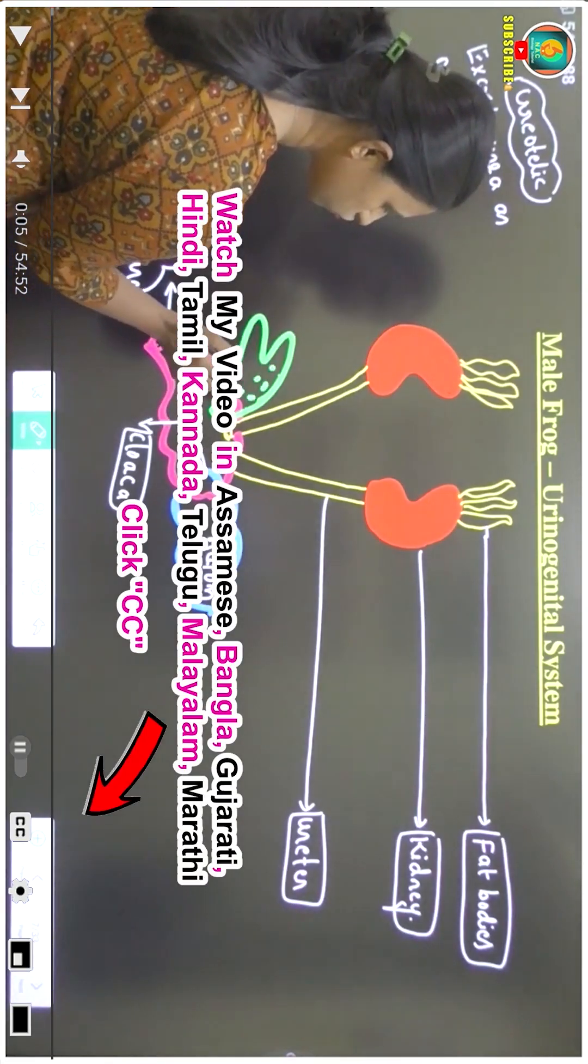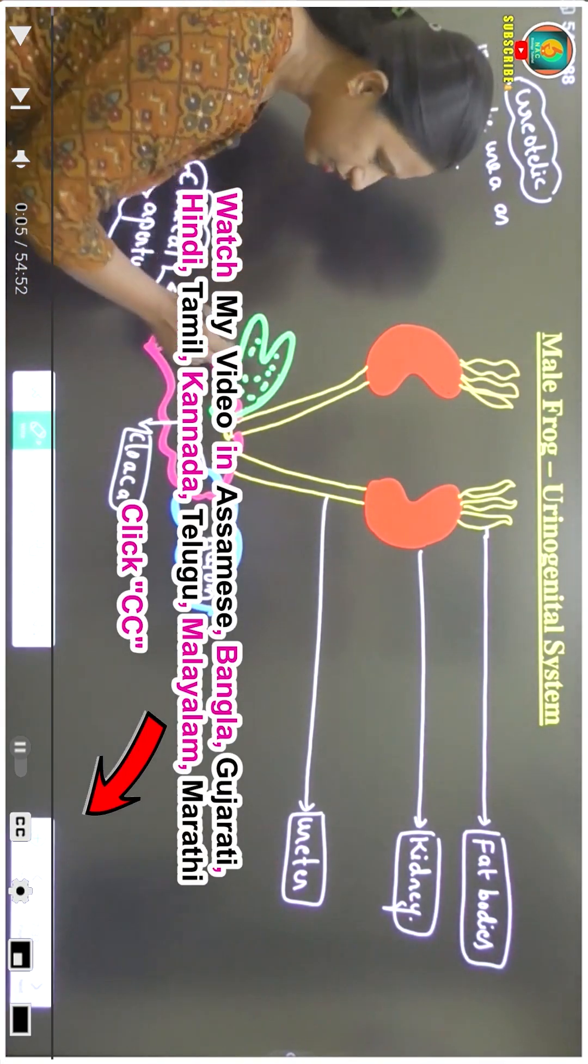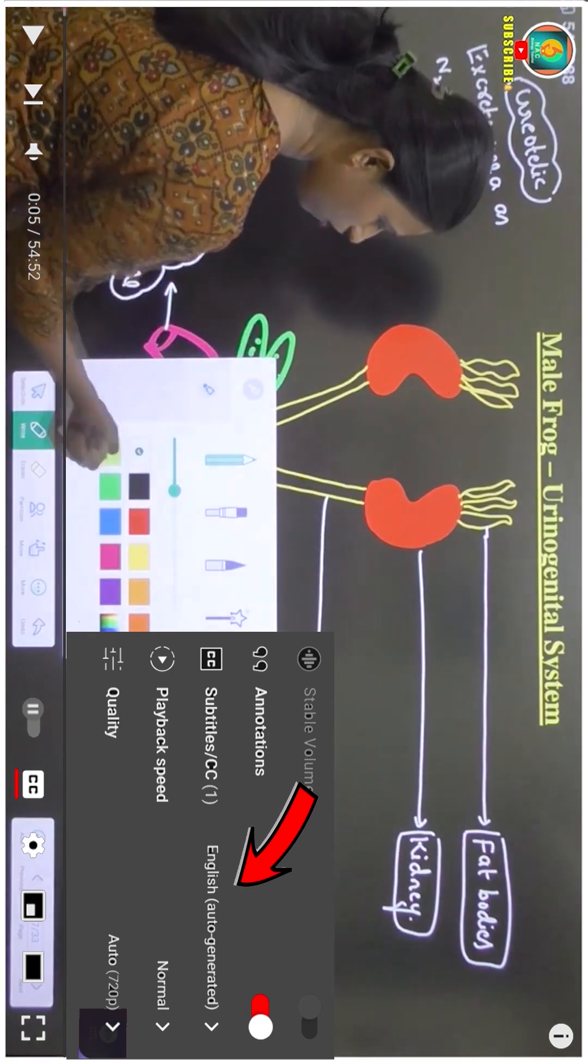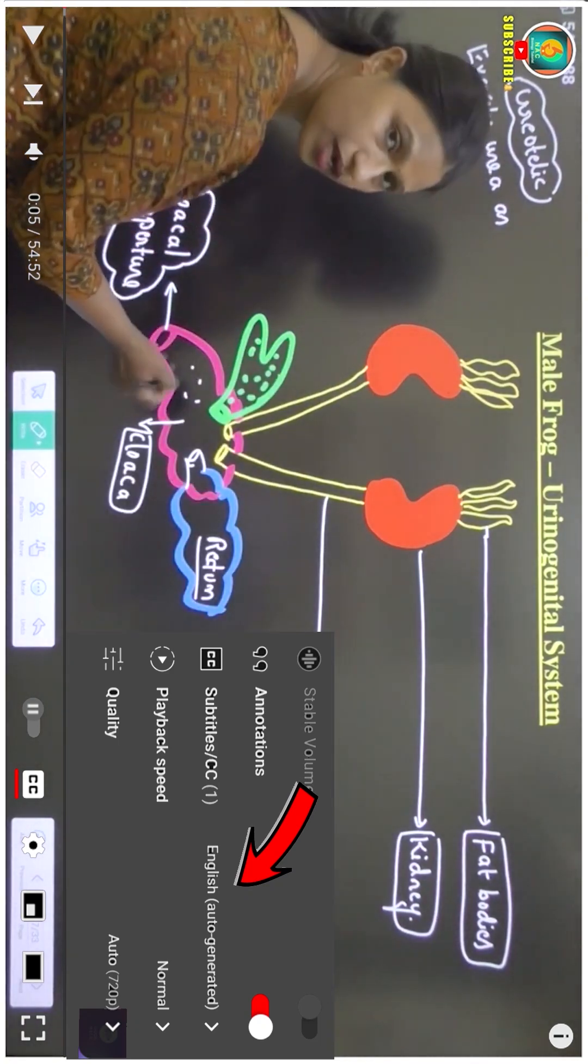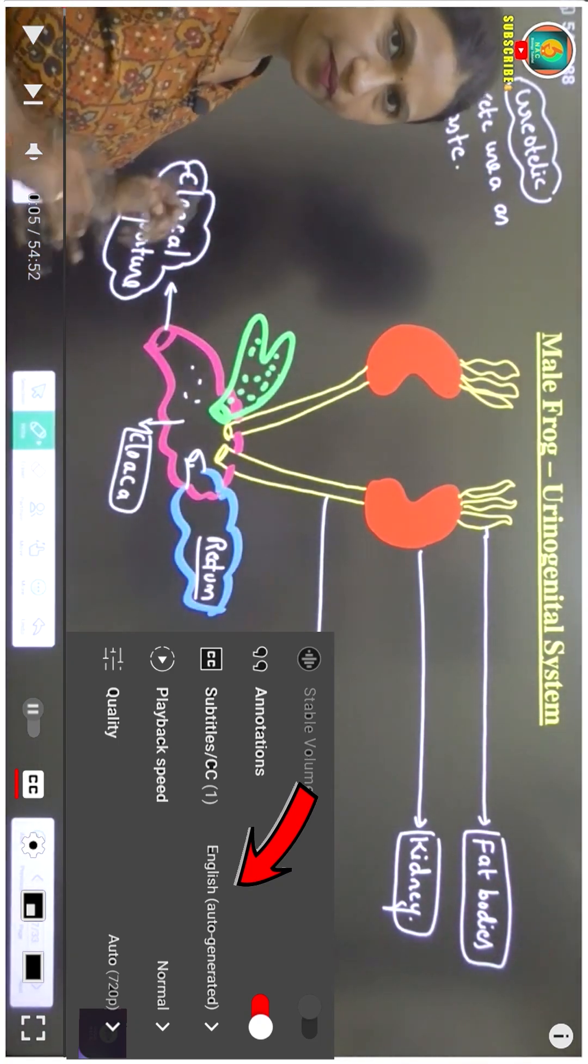In this bilobed structure, the urine, that is nothing but the urea, is going to get stored here. After that, it will be released into the cloaca and then released out through the cloaca chamber.